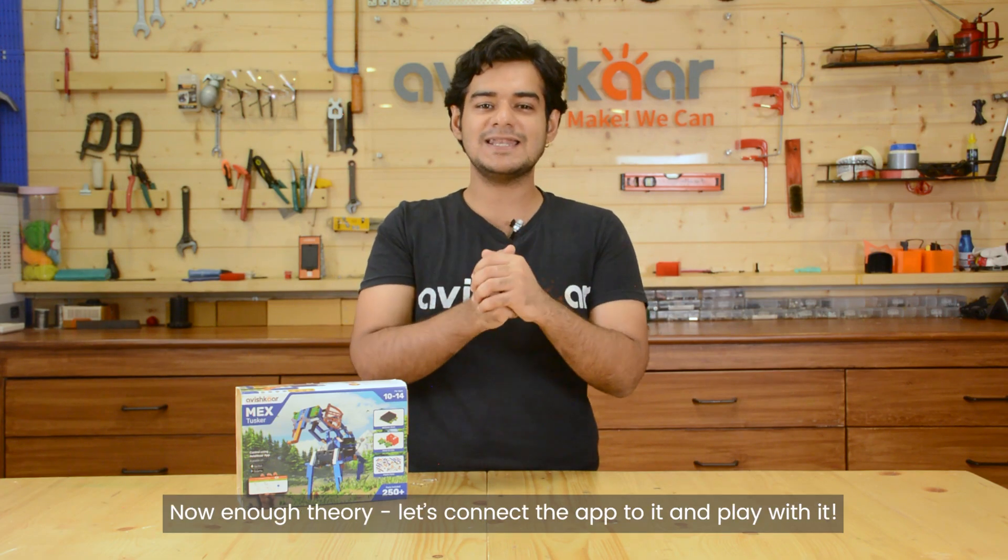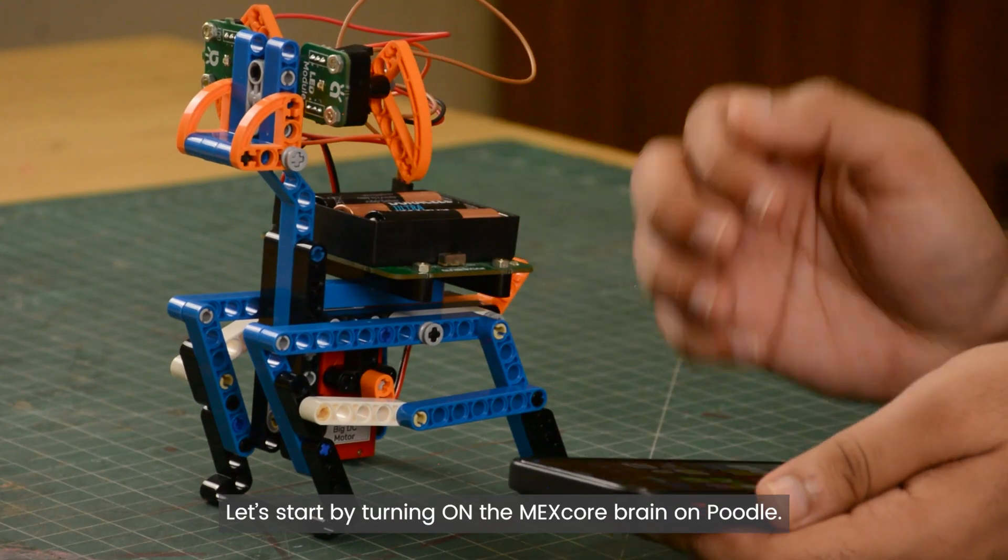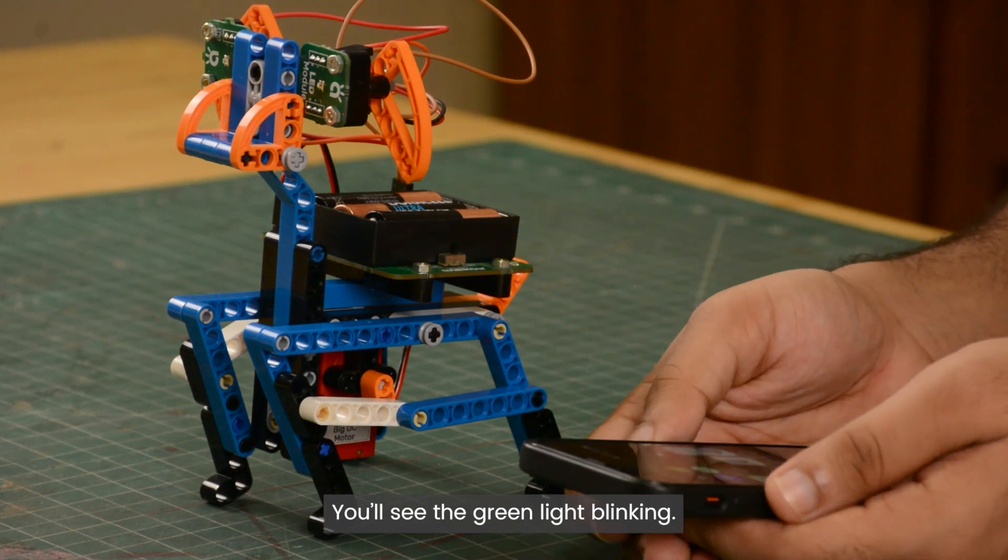Now enough theory. Let's connect the app to it and play with it. Let's start by turning on the MEXcore brain on Poodle. You'll see the green light blinking.